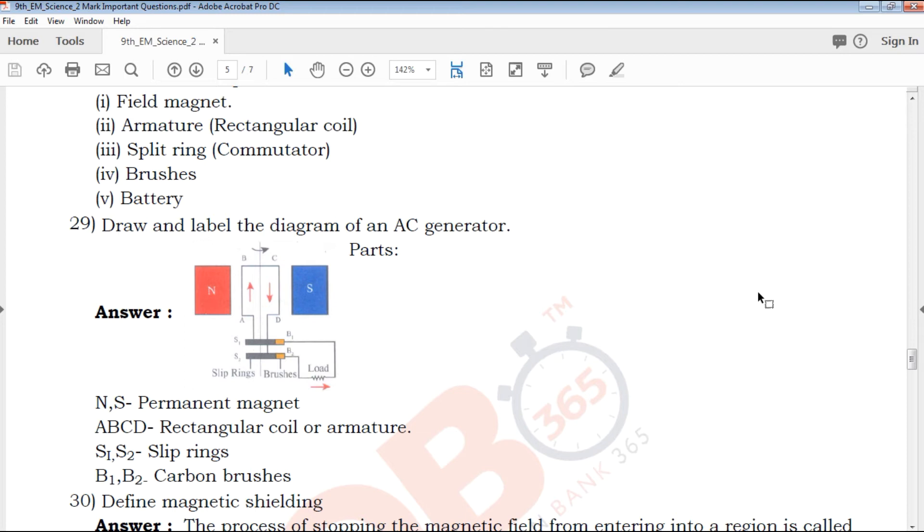Draw and label the diagram of AC generator. If you have a clear diagram, you will mark the parts: N-S poles, ABCD rectangular coil, S1 S2 slip rings, B1 B2 carbon brushes.